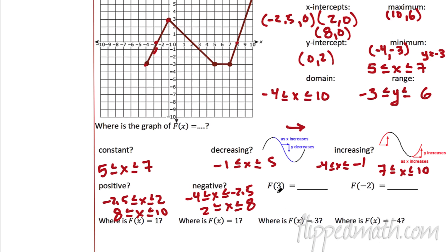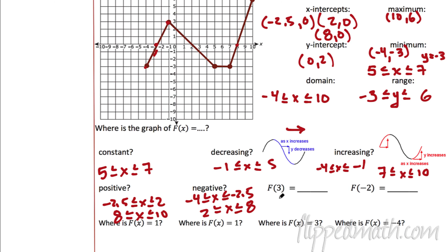f of 3 — this means x equals 3. So we go to our graph, x equals 3 is right here, and the graph is right there. What is the y value? Negative 1. f of negative 2 — that means the x value is negative 2. What's the y value? It's equal to 1.